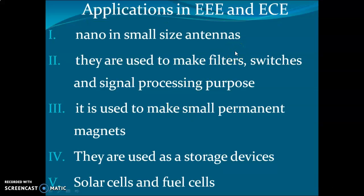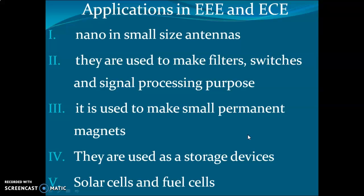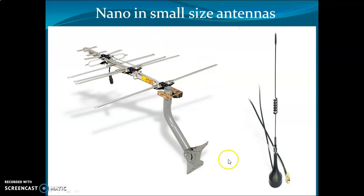In electronics and communications, nano metals are used in antennas for satellites and rockets. Due to the advancement of nanotechnology, these can be made very small. Nanomaterials are used to make filters, switches, and signal processing components, as well as small permanent magnets for energy storage devices. A 128 GB memory card now occupies just one centimeter of space, compared to the huge storage systems of the past.